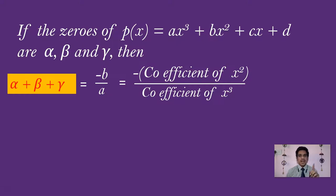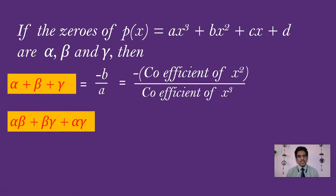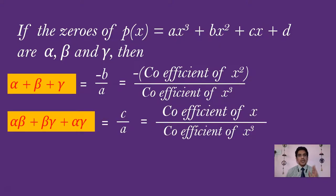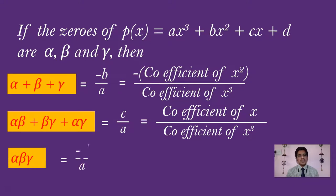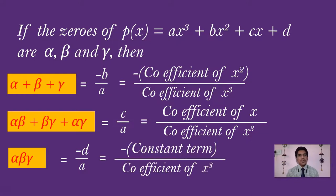The second relation: alpha·beta + beta·gamma + alpha·gamma is given by C by A, which is the coefficient of x divided by the coefficient of x³. The final one: the product of the zeros, alpha·beta·gamma, is given by minus D by A, where D is the constant term — that is, minus of the constant term divided by the coefficient of x³.